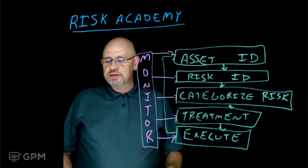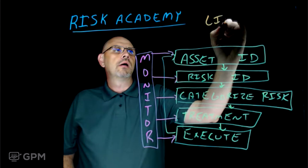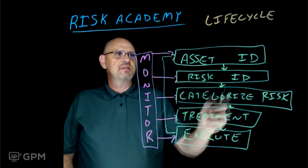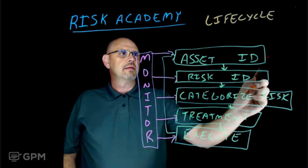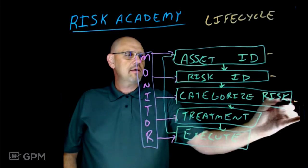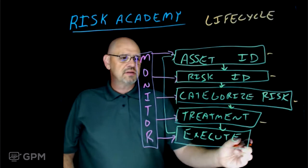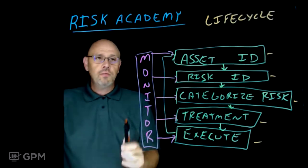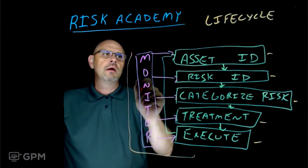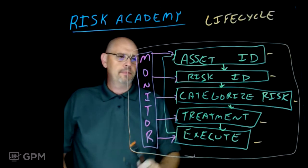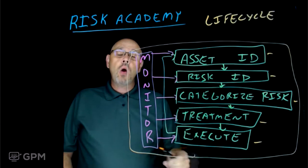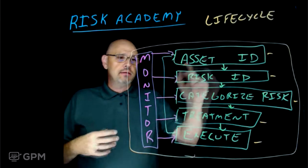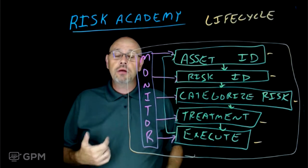Let's talk about the risk management life cycle. There is a life cycle to this. First thing we do is identify our assets, then we identify our risks, we categorize our risks, we figure out treatment options, then we execute it — maybe using a risk register. All along the way, we're constantly monitoring everything. We want to see how it's working and be able to identify new things. I call it the rinse and repeat — this is a cycle that's rinsed and repeated, but you're monitoring it along the way.